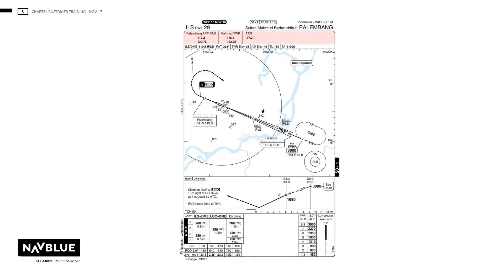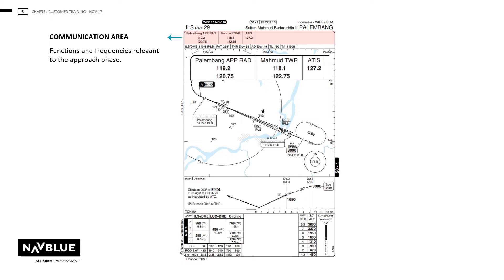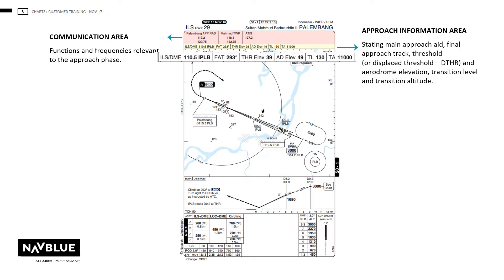The chart is laid out like so. The communications area shows the comms in order. The approach information starts with the main approach aid and frequency, which is defined as the aid that the final approach and minima is based on. Then the final approach track as published in the official documentation, threshold elevation or displaced threshold, transition level and transition altitude.